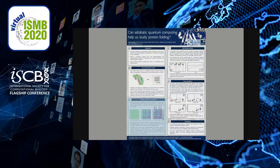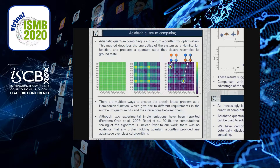The method we use to solve this problem with a quantum computer is an algorithm known as adiabatic quantum computing, or sometimes quantum annealing. Adiabatic quantum computing describes the energetics of the problem as a Hamiltonian function — an operator in quantum mechanics — and uses the adiabatic theorem of quantum mechanics to prepare a quantum state that closely resembles its ground state.